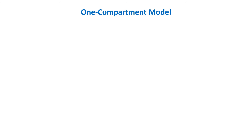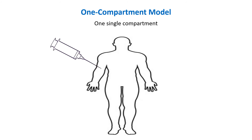The one compartment model is the simplest way to describe drug distribution and elimination in the body. This model assumes that all the tissues in the body are contained in a single compartment. This is just an approximation and doesn't account for delays caused by blood flow,